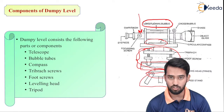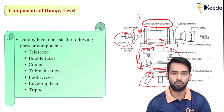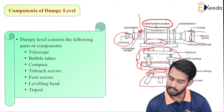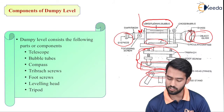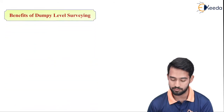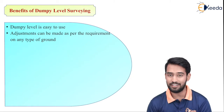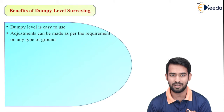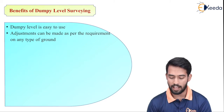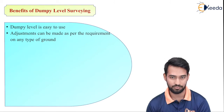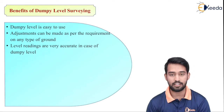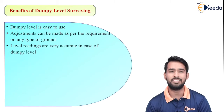Other parts include the eyepiece, through which we see the object, and the object glass, which is used for bisecting objects and is constructed with a diaphragm in which crosshairs are provided so we can bisect the ranging rod. Regarding benefits of dumpy level: it is easy to use with no complex arrangement. Adjustments can be made as per requirement on any type of ground by using tripods.